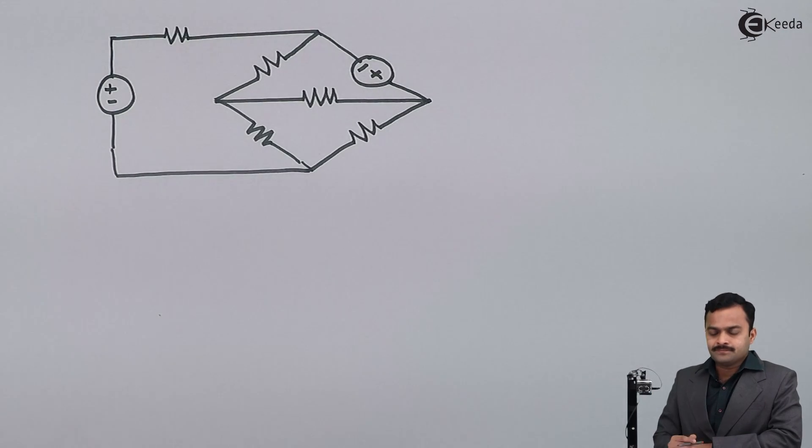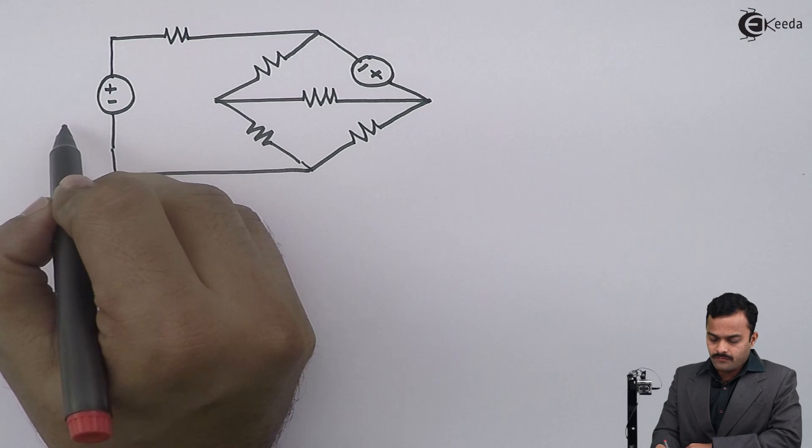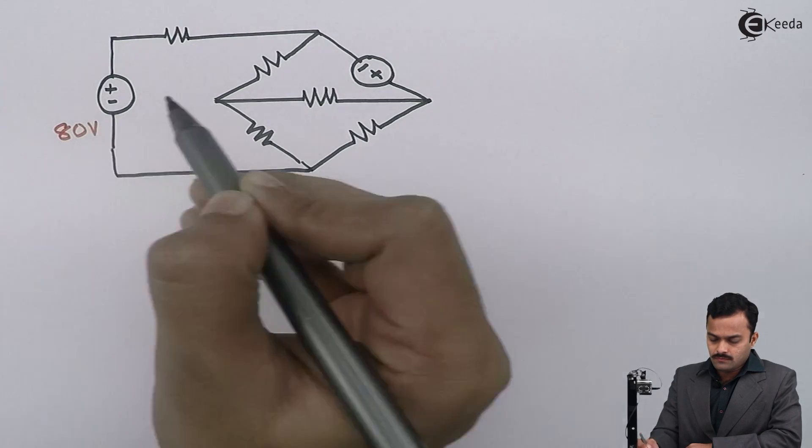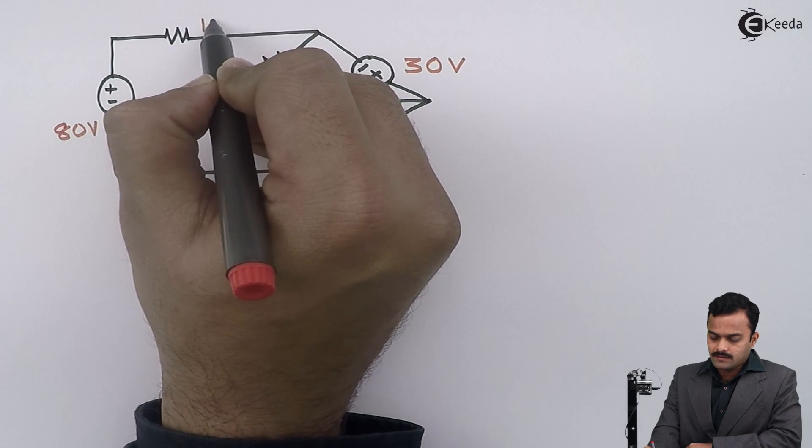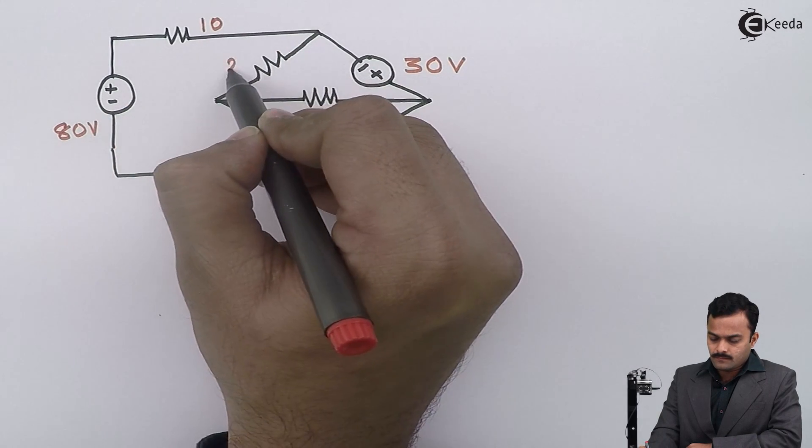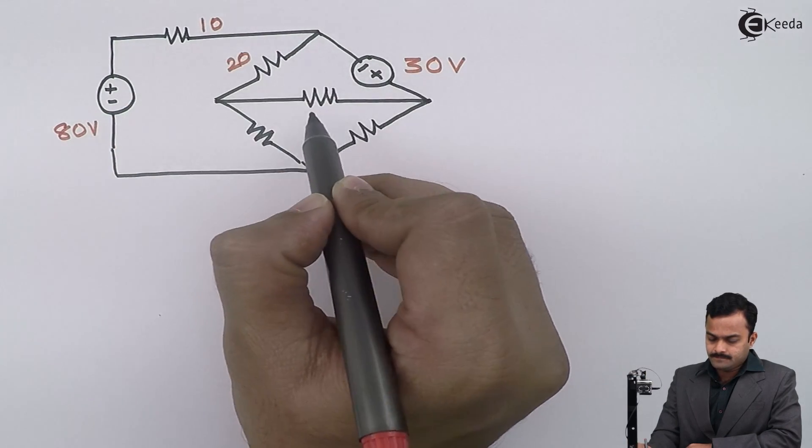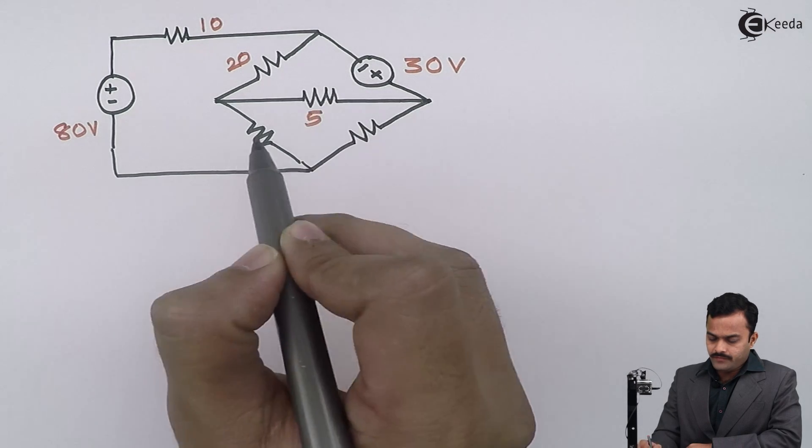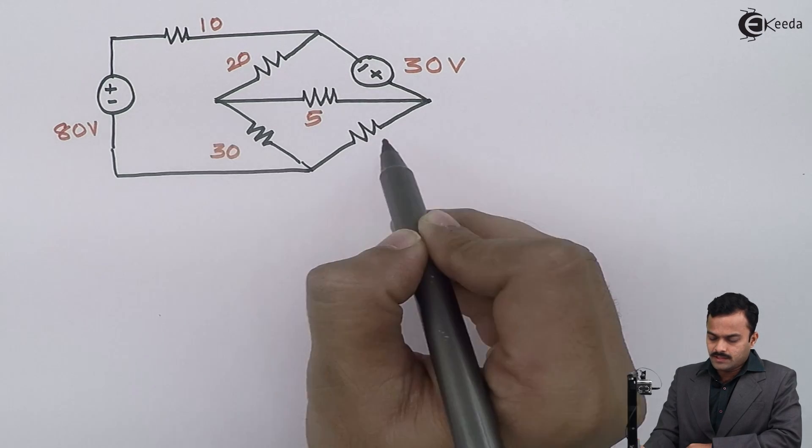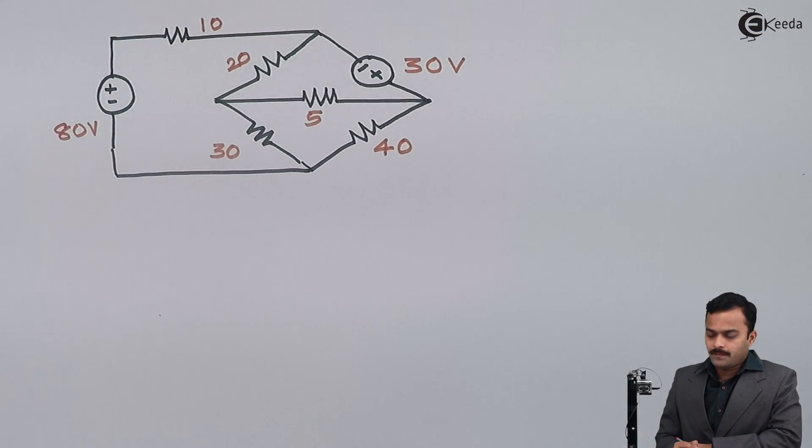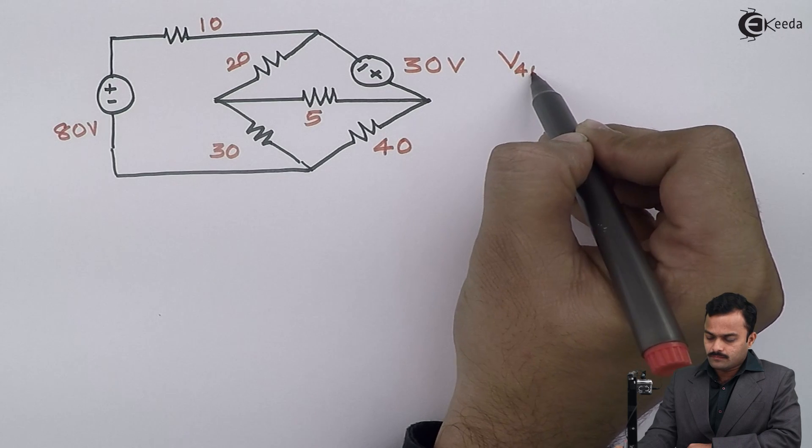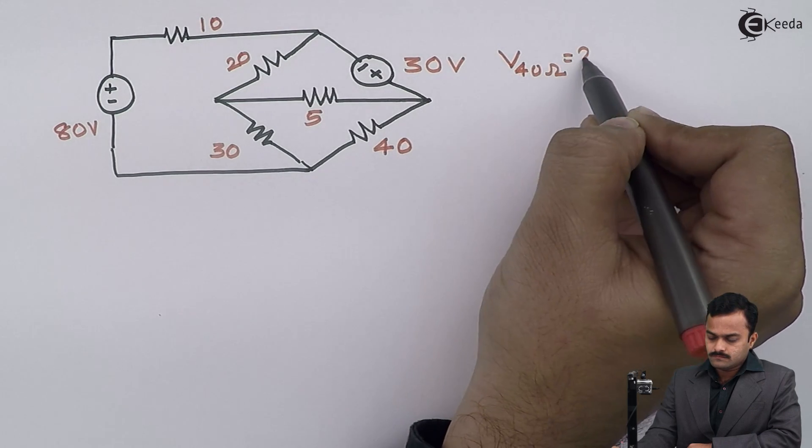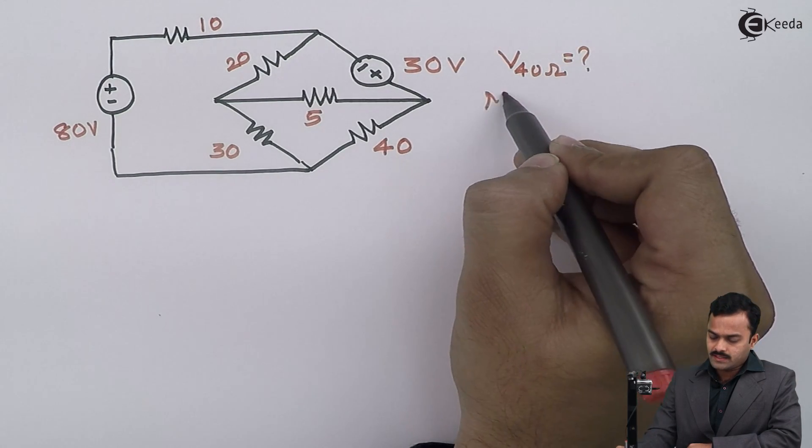The circuit is having voltage sources of 80 volts and 30 volts, and resistances are 10, 20, 5, 30, and 40 ohms. The objective is to get the voltage across 40 ohms, and we have to use mesh analysis.